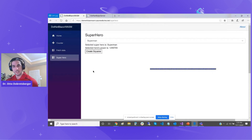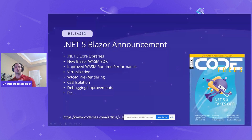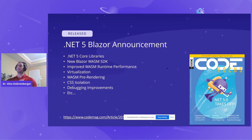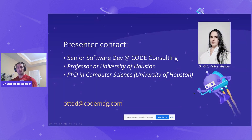Looks like we're nearing the end of my time slot. If you go and take a look at the article published in Code Magazine, there's an overview of everything new in .NET 5 related to Blazor — from .NET core libraries to virtualization, CSS isolation, and more. You can read all that in the new Code Focus Magazine, and you can always send me an email if you have questions.